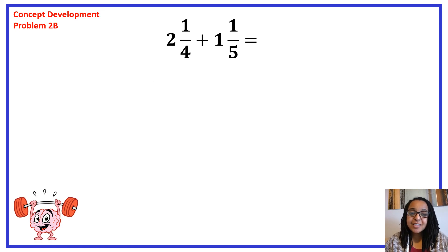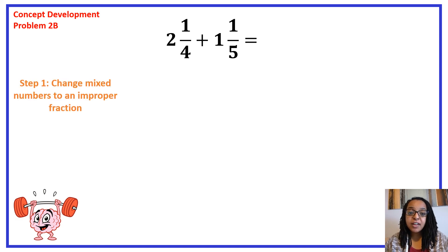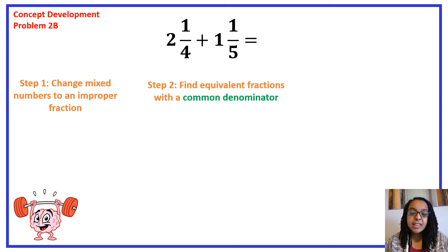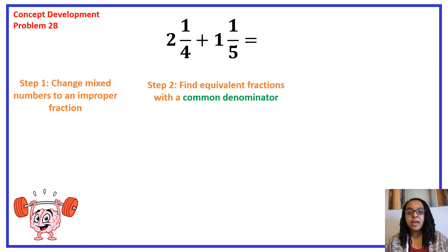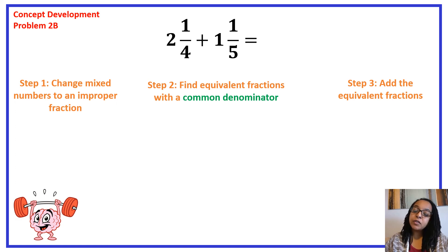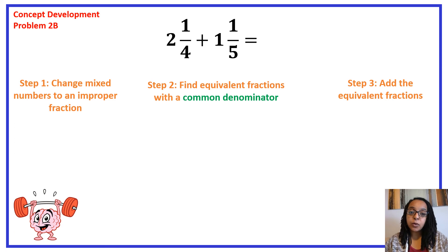Now try this problem on your own: 2 and 1 fourth plus 1 and 1 fifth. Remember, every mixed number is first changed to an improper fraction. Then find a common denominator by listing multiples in your head. When you find the equivalent fractions, remember you have to add them. I'm going to put up the answers on the screen as you're working, and I'd like you to check your work as you go.